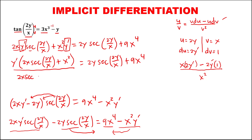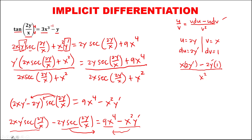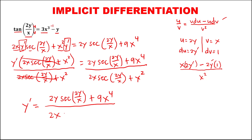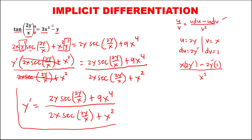Then divide now both sides by 2x secant squared of 2y over x, plus x squared, and also this side 2x secant squared of 2y over x, plus x squared, so we can cancel. Therefore y prime equals 2y secant squared of 2y over x, plus 9x to the power 4, all over 2x secant squared of 2y over x, plus x squared. So this is now the derivative.